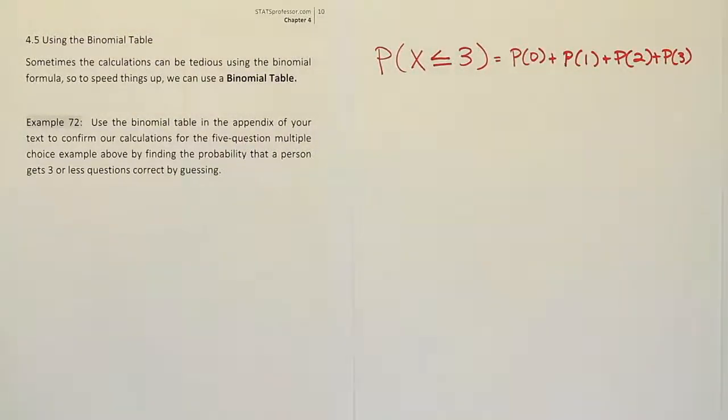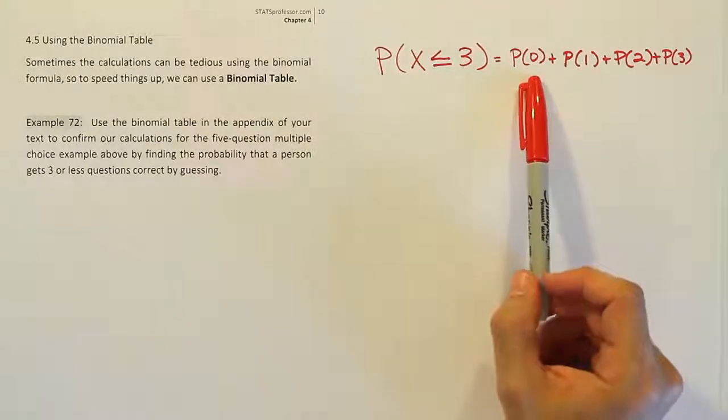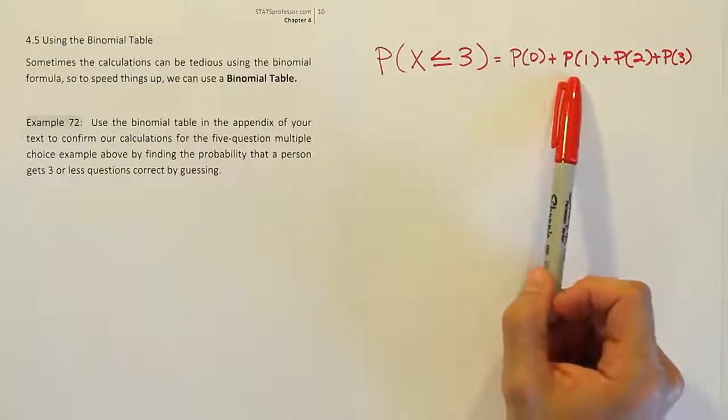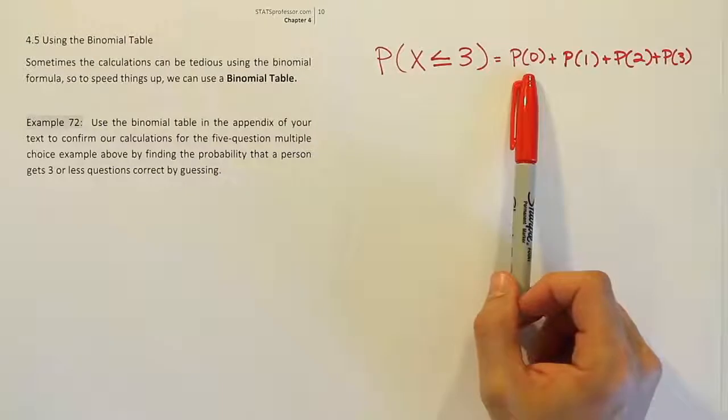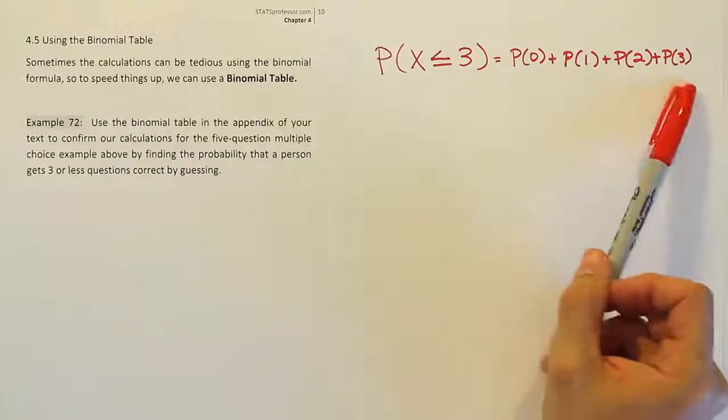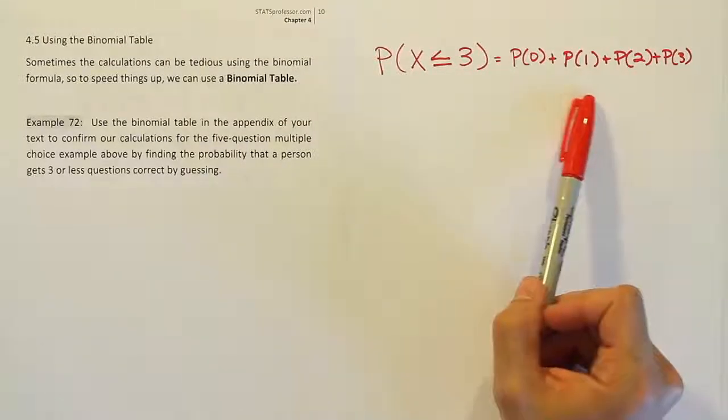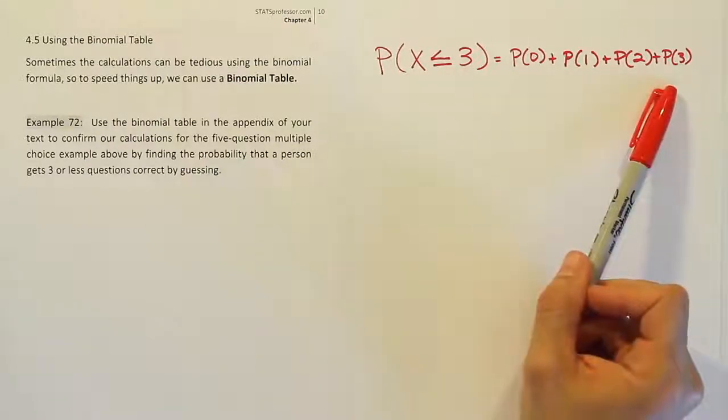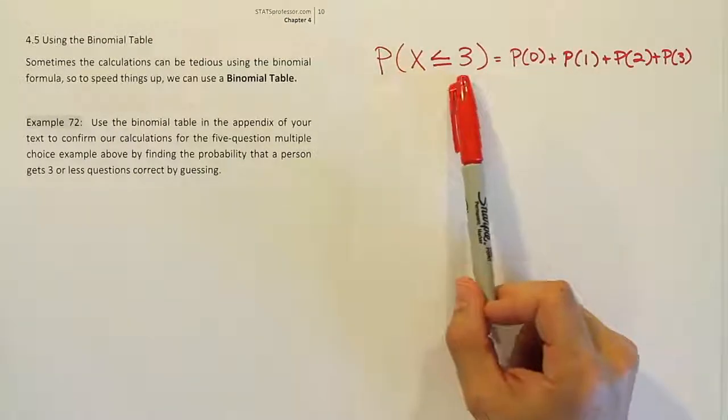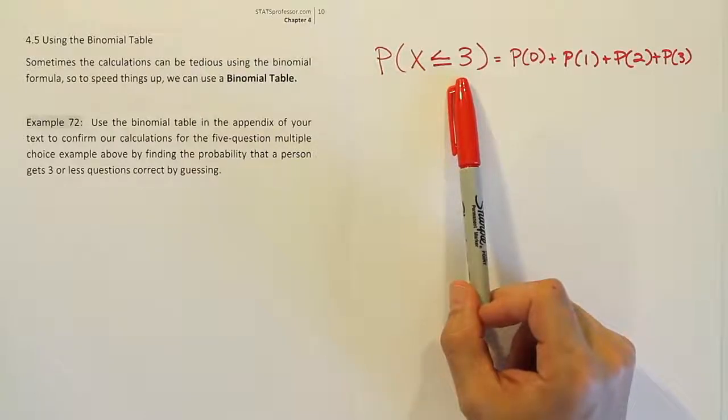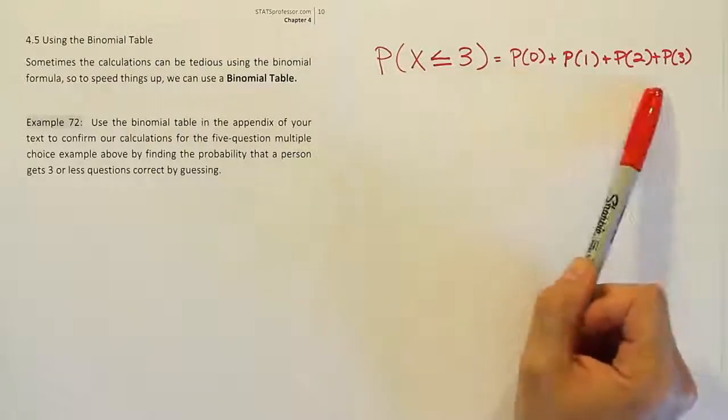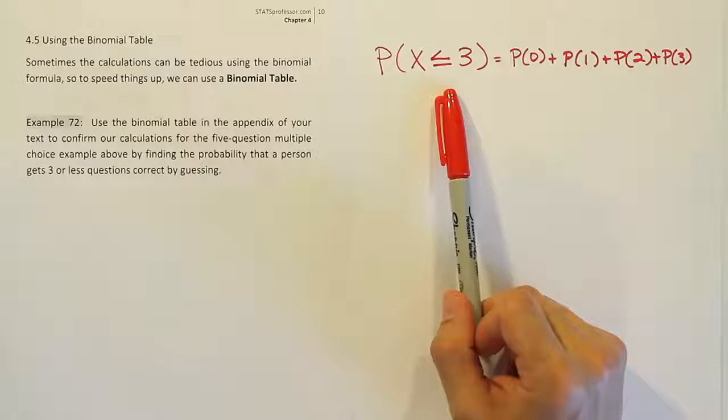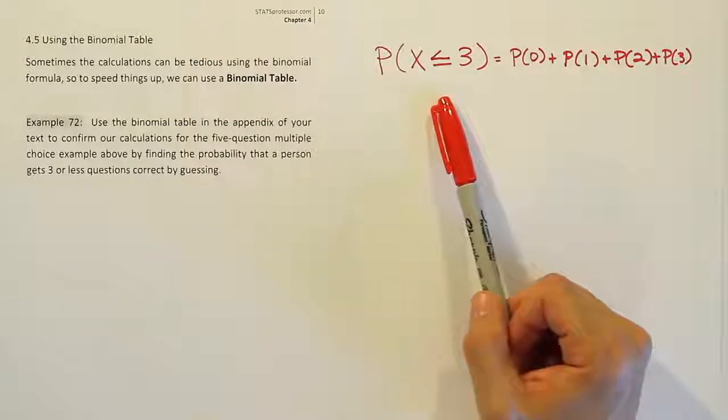All right, well, we could work those out separately. Each of these is a separate binomial probability formula filled in for the scenario where you have zero successes, one success, two successes, three successes. You'd have to work them out all separately and then add all the results together. That would take a long time. And what if it was like less than or equal to 30 and you had 50 trials or something? That'd be a lot more work and it would be virtually impossible to do this without some kind of software or table.